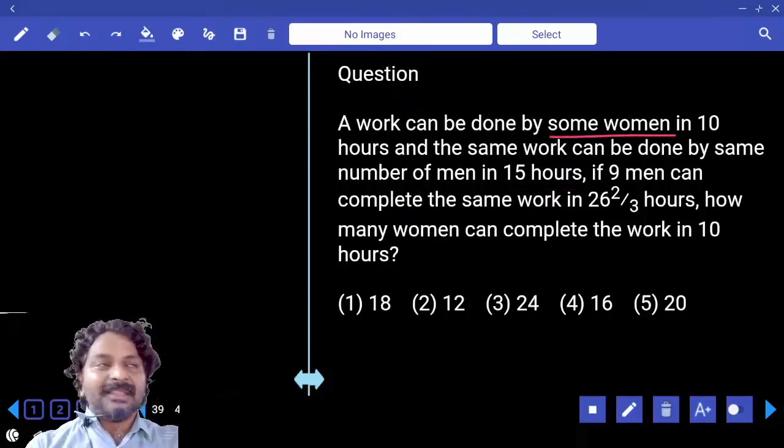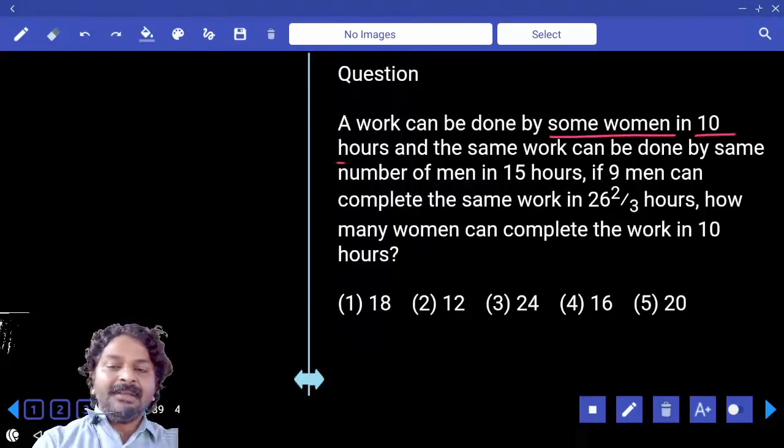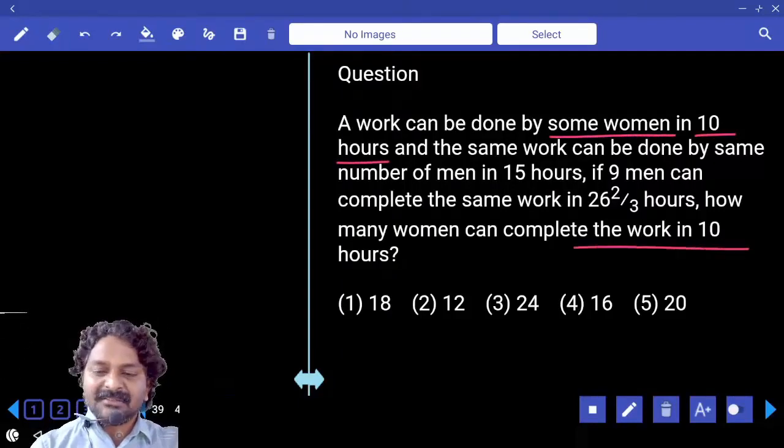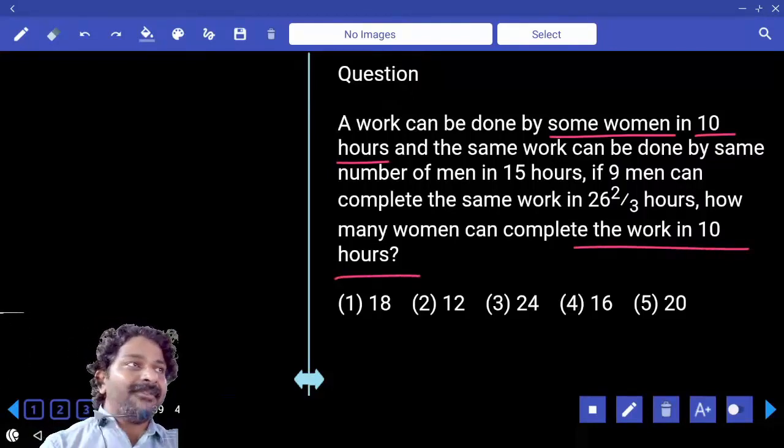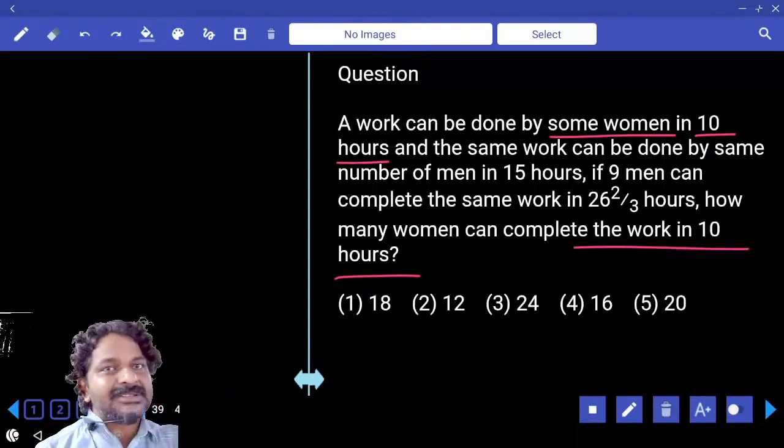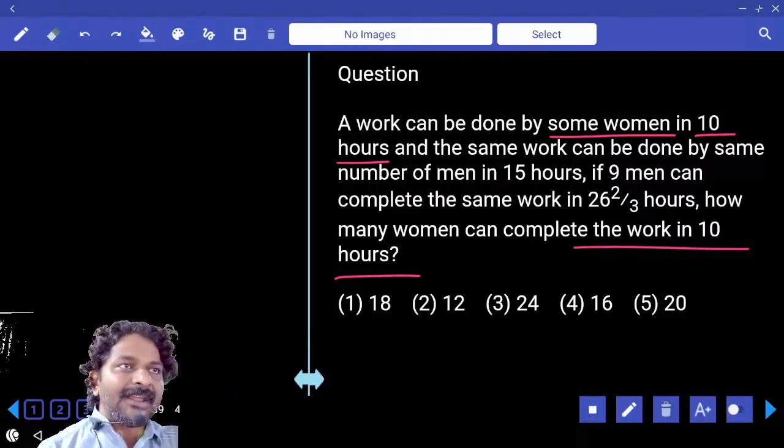See, X women are there. They can complete the work in 10 hours and the same is the question. Time is same, right? So, in our information we have 10 hours and question also 10 hours and that is related to women, correct?